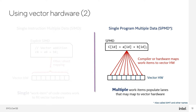We'll call the instances of the program work items, matching OpenCL and SYCL naming. Either a compiler, or a runtime, or even hardware can be involved in mapping the SPMD work items to data parallel hardware. We'll call this programming model SPMD, but note that it is also sometimes called Single Instruction Multiple Thread, or SIMT, and also other names that we consider equivalent.